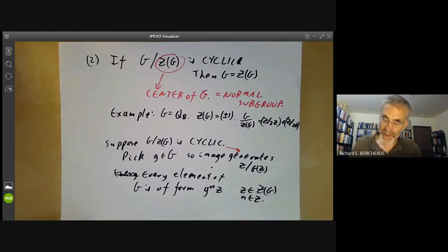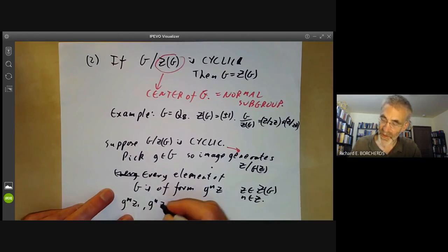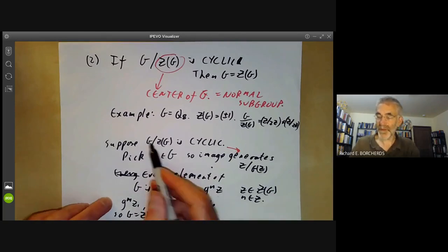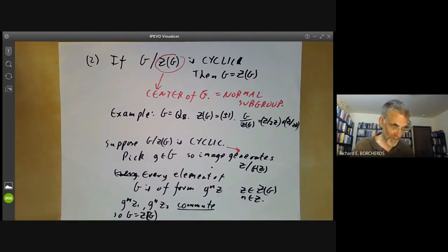And you notice that G to the m Z1 and G to the n Z2 commute. That's because Z1 commutes with everything and Z2 commutes with everything because it's in the centre. And G to the m commutes with G to the n because they're both powers of G. So in other words, everything in G commutes with everything else in G. So G is equal to the centre of G. And the quotient must, in fact, be just one element.